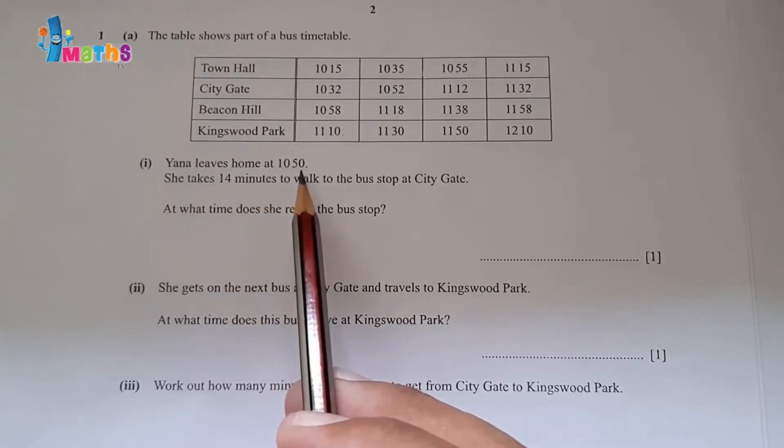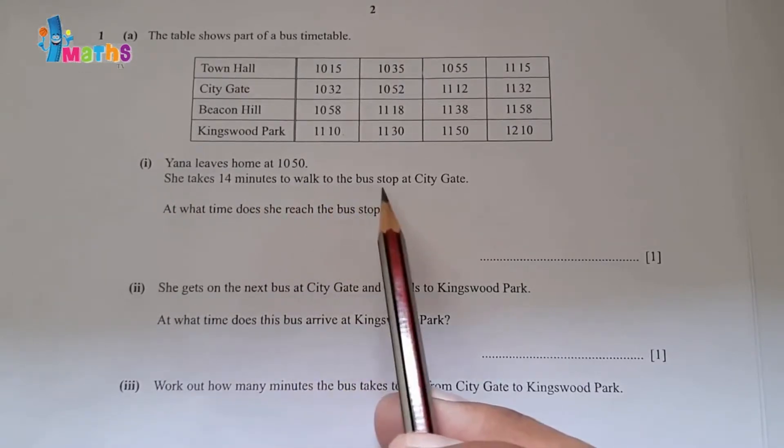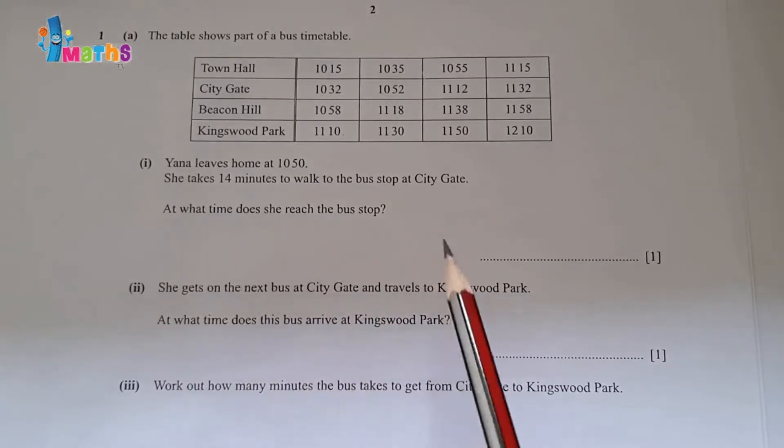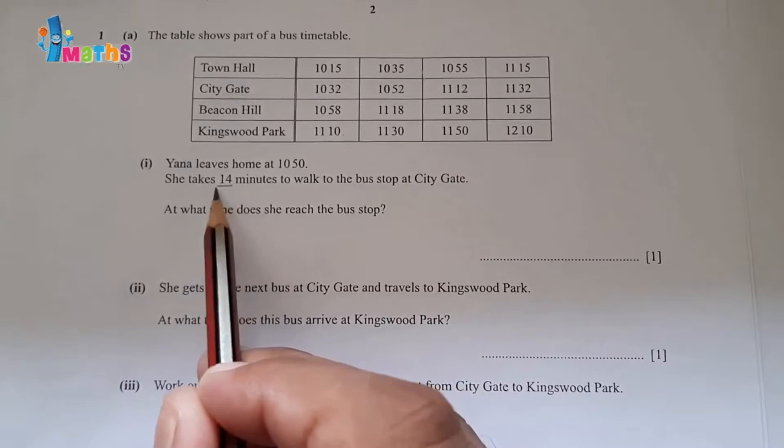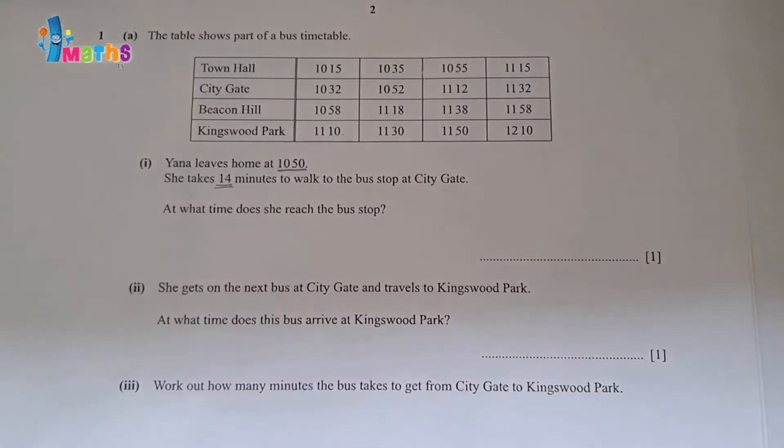She takes 14 minutes to walk to the bus stop at City Gate. At what time does she reach the bus stop? We will have to add 14 minutes to 10 hours and 50 minutes, so we'll use the calculator.